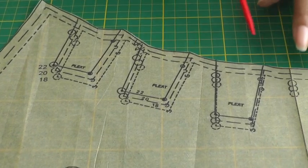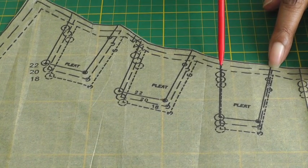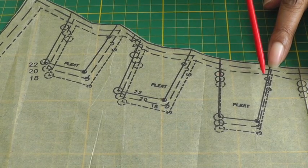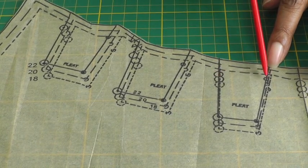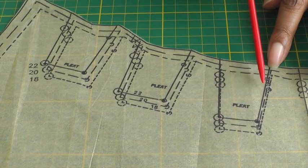Now for pleats, they are generally two parallel lines and you have circles that indicate matching up points. So you'd match this circle to that line and that circle to that line in order to give your pleat.